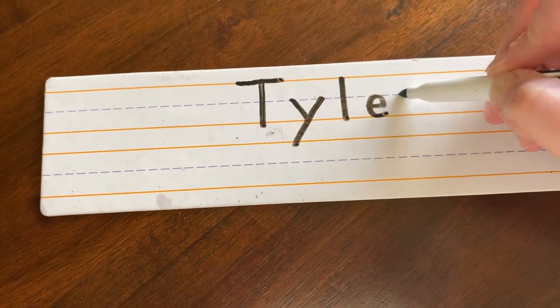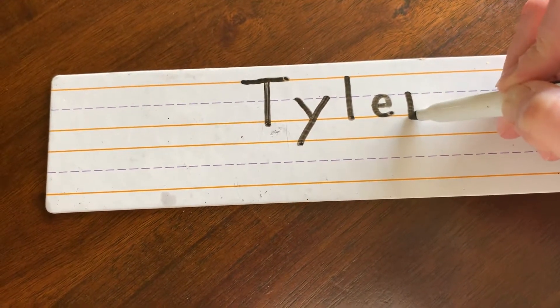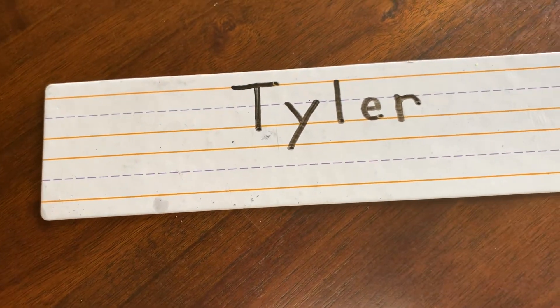R. Start at the dotted line, straight down, ride the elevator up and hook. Tyler.